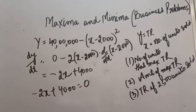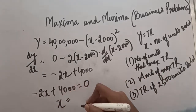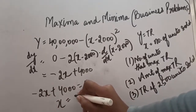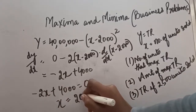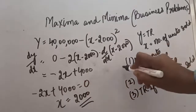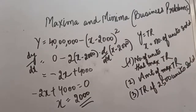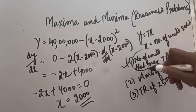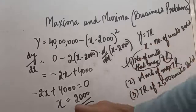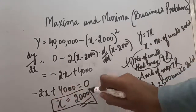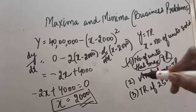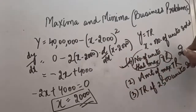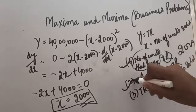The next step in maxima minima is to set the derivative equal to 0, so we can calculate the value of x. From here, x equals minus 4000 divided by minus 2, which is 4000 by 2, that is 2000. So x is 2000. Since x is the number of units sold, 2000 units is the value that will maximize the total revenue.